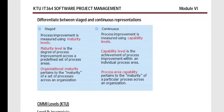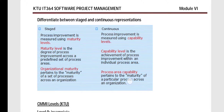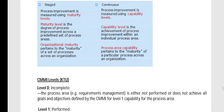A maturity level is a degree of process improvement across a predefined set of process areas — it gives a degree of improvement. A capability level is the achievement of process improvement within a specific process area. Organizational maturity pertains to the maturity of a set of processes across an organization, while process area capability refers to the maturity of a particular process across an organization.